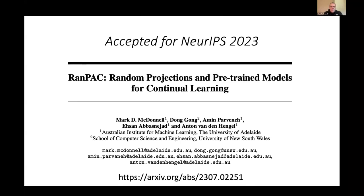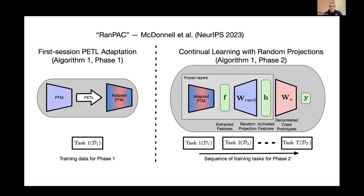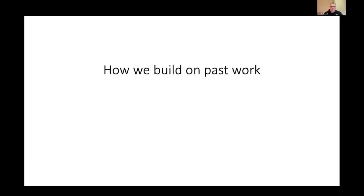Our paper — co-authored with Dong Gong, Armin Parvaneh, Sn Abbas Najad, and Anton van den Hengel — was just accepted to NeurIPS 2023 and is available on arXiv now. It's a class prototype-based method using pre-trained models. Rather than starting with the diagram of our algorithm, I'll start with past work and how we've built on it.